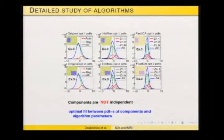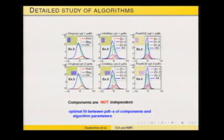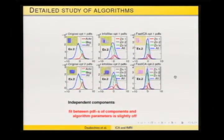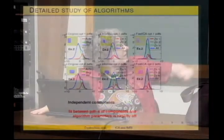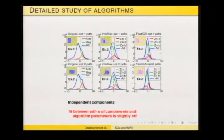If we made a perfect fit between the true probability distribution functions and the parameters we put in, then both InfoMax and FastICA could get out the different components. If the components were not independent — the overlap of the rectangles created dependence — we were still getting them out perfectly. However, if we had truly independent components but the PDFs had parameters that were not well matched, the algorithms did not unmix.